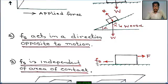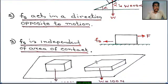The fictional force fs — static friction — acts in the opposite direction. Next, the third law of friction: static friction fs is independent of the area of contact.